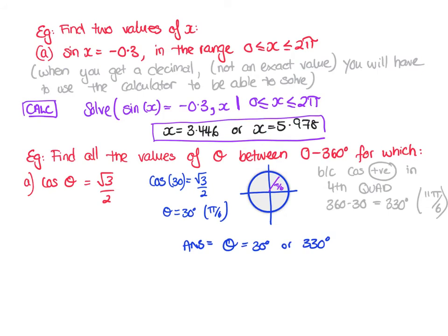Let's move on. Find two values of x when sine(x) equals negative 0.3, between a given range. This is not an exact value — negative 0.3 is not like a half — so you can't work it out from memory. When it's one of those, you will use your calculator. You put in: solve sine(x) = −0.3 for x, add the restriction using the control-equals button, and the calculator will give only the answers within the required range.